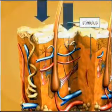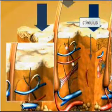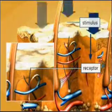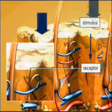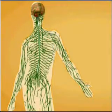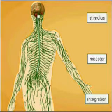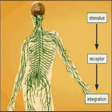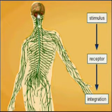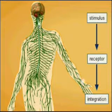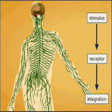A stimulus is sensed by a receptor in the nervous system. The stimulus is then conducted to other parts of the nervous system where it is integrated — that is, sorted and interpreted — and an appropriate response is generated.